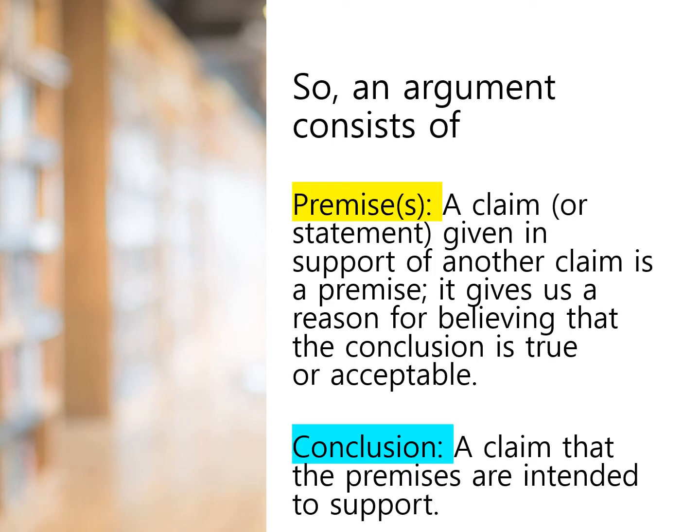An argument consists of premises — claims or statements given in support of another claim. In other words, a premise or premises gives us a reason for believing that the conclusion is true or acceptable. A conclusion is a claim that the premises are intended to support.